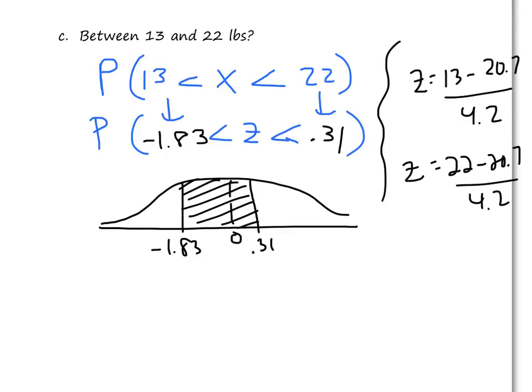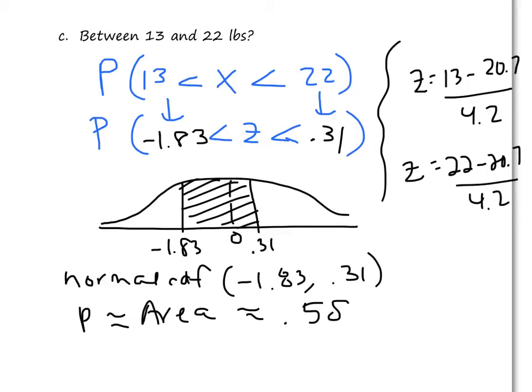So that one is actually when you, if you watch that video on how to do normal CDF on the calculator, on the calculator, my end points, if I did normal CDF, remember that's under distributions above VARs, I would go, I want the area from negative 1.83 to 0.31. That's my end points. And if I did that, my area, same thing as my probability, those are the same thing, would come out to be about 0.5881.